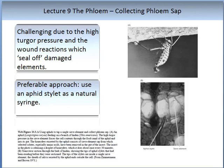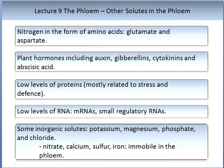It is quite challenging to tap the phloem sap due to the high turgor pressure and wound reactions which seal off damaged elements. Aphids have evolved methods such as using a stylet as a natural syringe, allowing them to overcome the protective mechanism and access the contents of the phloem. Other solutes in the phloem include nitrogen in the form of amino acids, glutamate and aspartate; plant hormones including auxin, the gibberellins, cytokinins and abscisic acid (ABA); low levels of proteins mostly related to stress and defence; low levels of RNA mostly as messenger RNA and small regulatory RNA compounds. Some inorganic solutes include potassium, magnesium, phosphate and chloride. Nitrogen, calcium, sulphur and iron are immobile in the phloem.